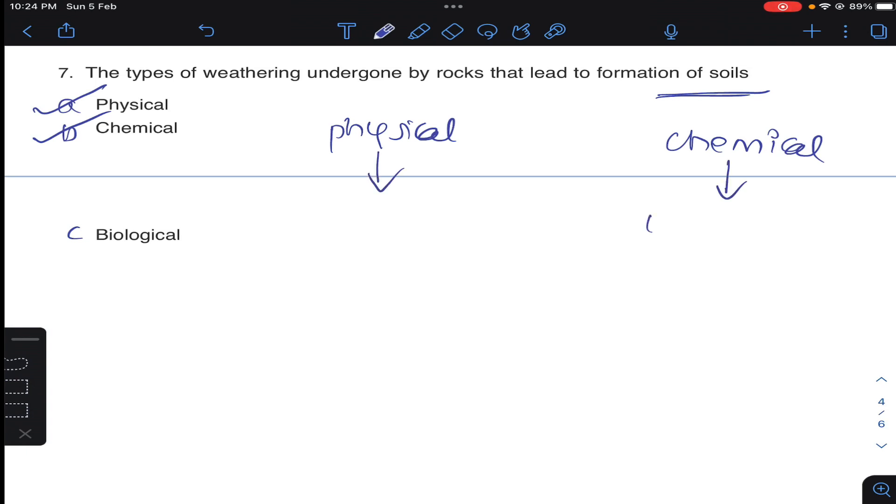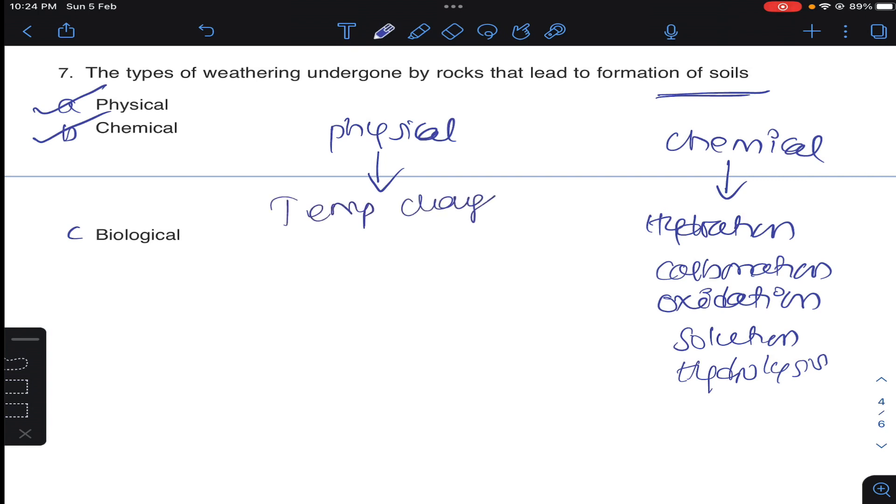Under chemical weathering there are different types: hydration, carbonation, oxidation, solution, and hydrolysis. Under physical weathering: temperature changes, wedging action of ice, spreading of roots, and abrasion.